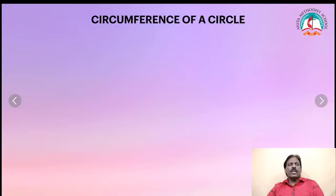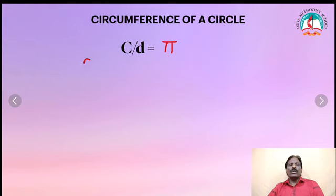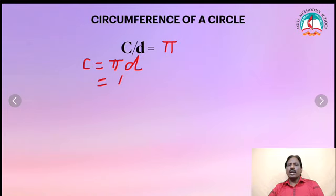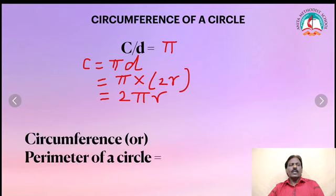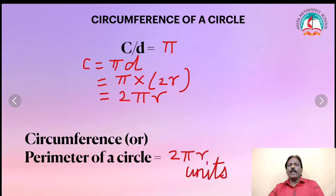Now, circumference of a circle: we can write C by d is equal to pi. Therefore, C is equal to pi into d. And d we can write as 2r, 2 into radius. So, pi into 2r is equal to 2πr. Therefore, circumference or perimeter of a circle is equal to 2πr units. That is the formula.